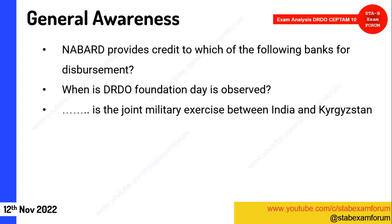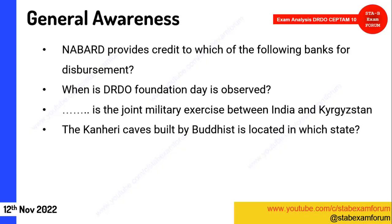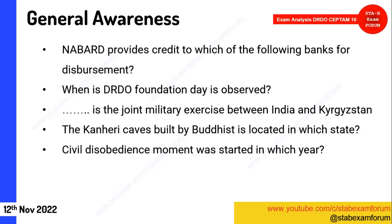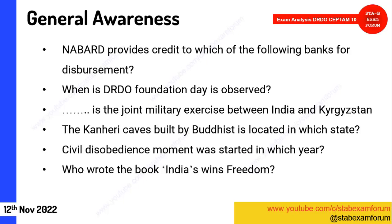A question on the joint military exercise between India and Kyrgyzstan — it's Khanjar. Kanheri Caves, built by Buddhists, are located in which state? The answer was Maharashtra. A question on the Civil Disobedience Movement — it started in 1930. Who wrote the book 'India Wins Freedom'? It's Maulana Abul Kalam Azad.